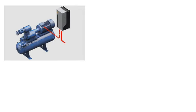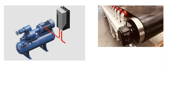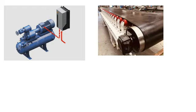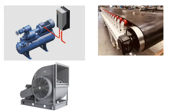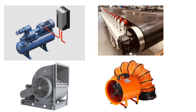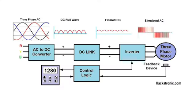In industries there are many appliances in which we need to vary the speed — for example, in belt conveyors we need to vary the speed, and also in blowers and fans. There are many kinds of appliances in industries where we need to vary the speed, so basically the VFD is used to vary the speed of those appliances.